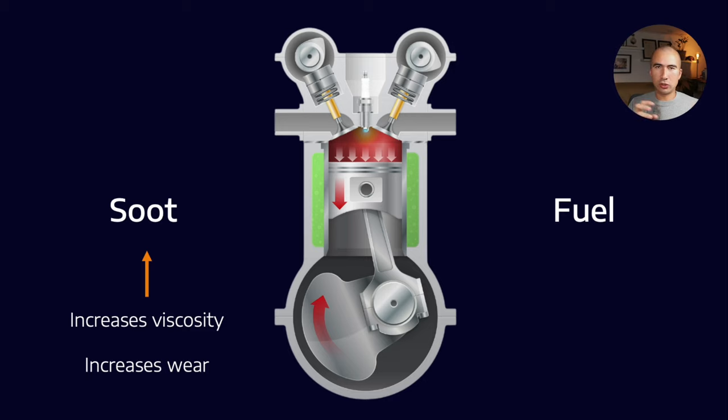What happens is that soot particles by themselves are not all that dangerous, but when they agglomerate—when they start sticking together—they form abrasive particles which work their way through the engine much like sand would. They can be very abrasive and you'll start to see it in the iron levels of your oil analysis. That's how it increases wear.